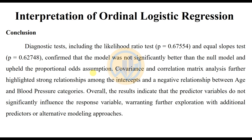The diagnostic tests, including the likelihood ratio test (p = 0.67) and equal slope test (p = 0.62), confirmed that the model was not statistically better than the null model and upheld the proportional odds assumption. The covariance and correlation matrix analysis further highlighted the strong relationship among the intercepts and a negative relationship between age and blood pressure categories. Overall, the results indicate that the predictor variables do not significantly influence the response variable, warranting further exploration with additional predictors or alternative modeling approaches.